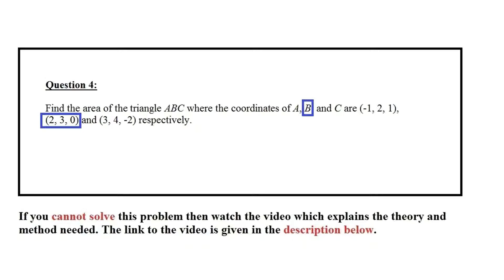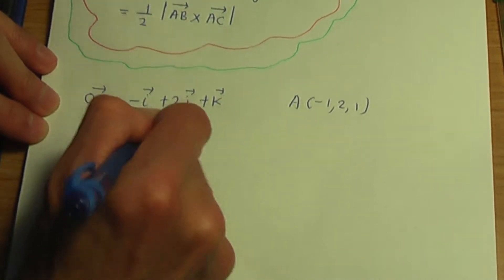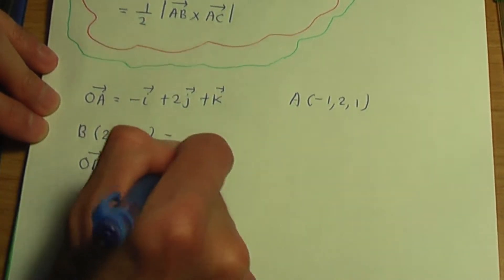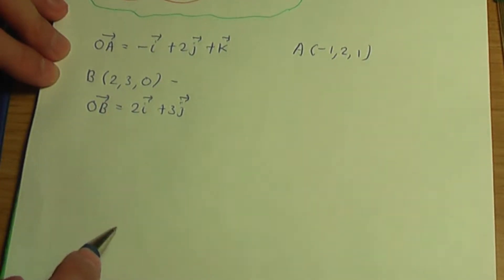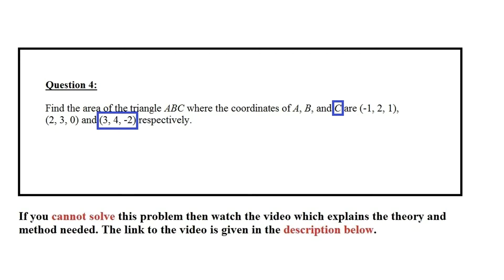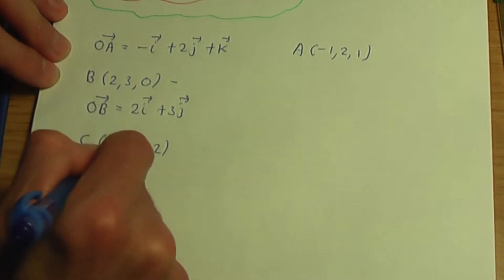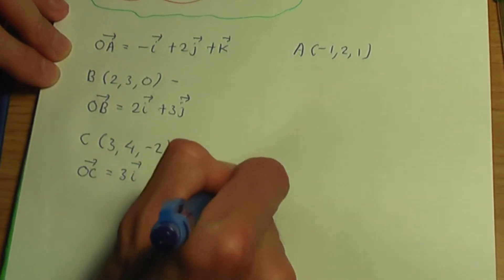Going back to the screenshot, we have the coordinate of B given as 2, 3, 0. So the vector OB will be 2I plus 3J, with no K component. And C in coordinate form is 3, 4, minus 2, meaning that the vector OC will be 3I plus 4J minus 2K.